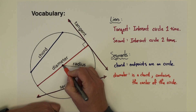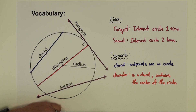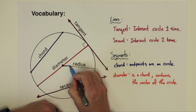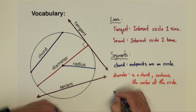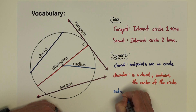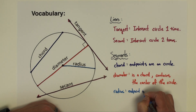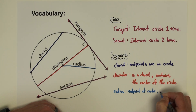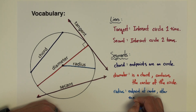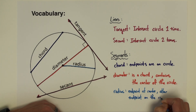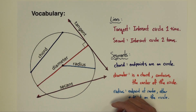So the diameter has to pass through the center of the circle. And finally our last segment — we'll highlight it right now — it's called the radius. The radius has one endpoint at the center and the other endpoint on the circle. So there you have it. Those are our lines and segments of a circle.